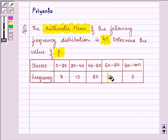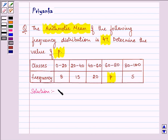We need to find out the value of this P. So let us proceed with the solution. Let us redraw the given table once again.